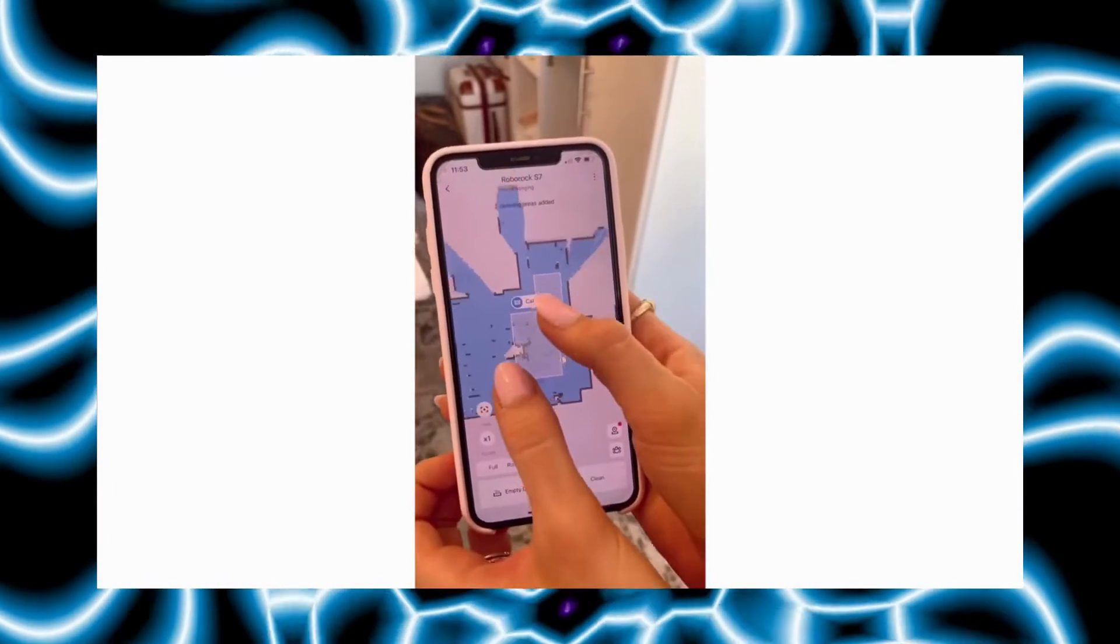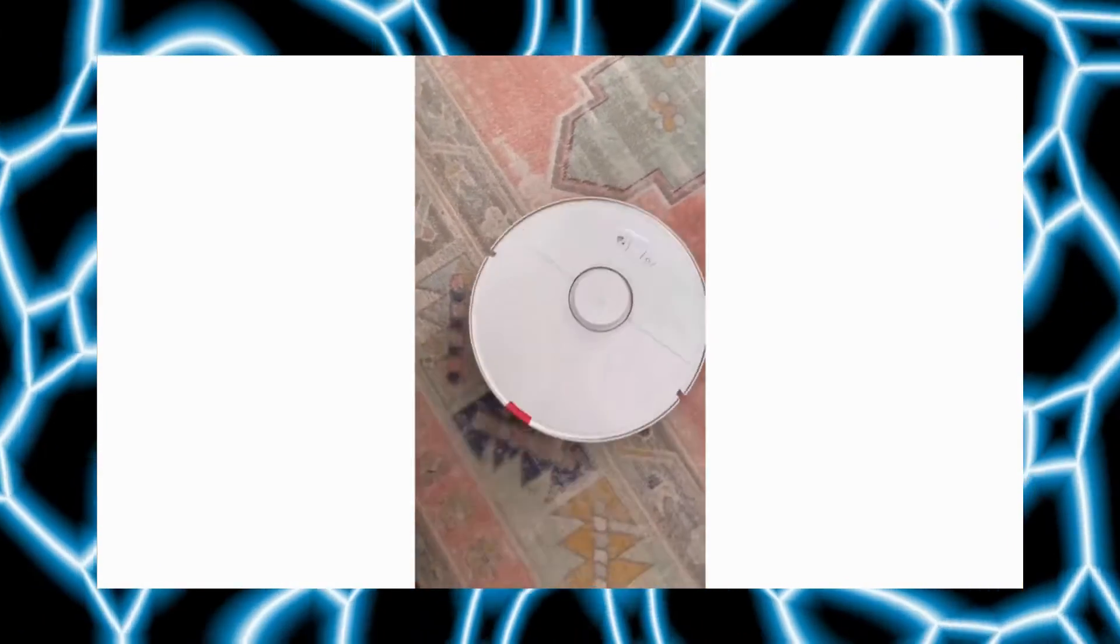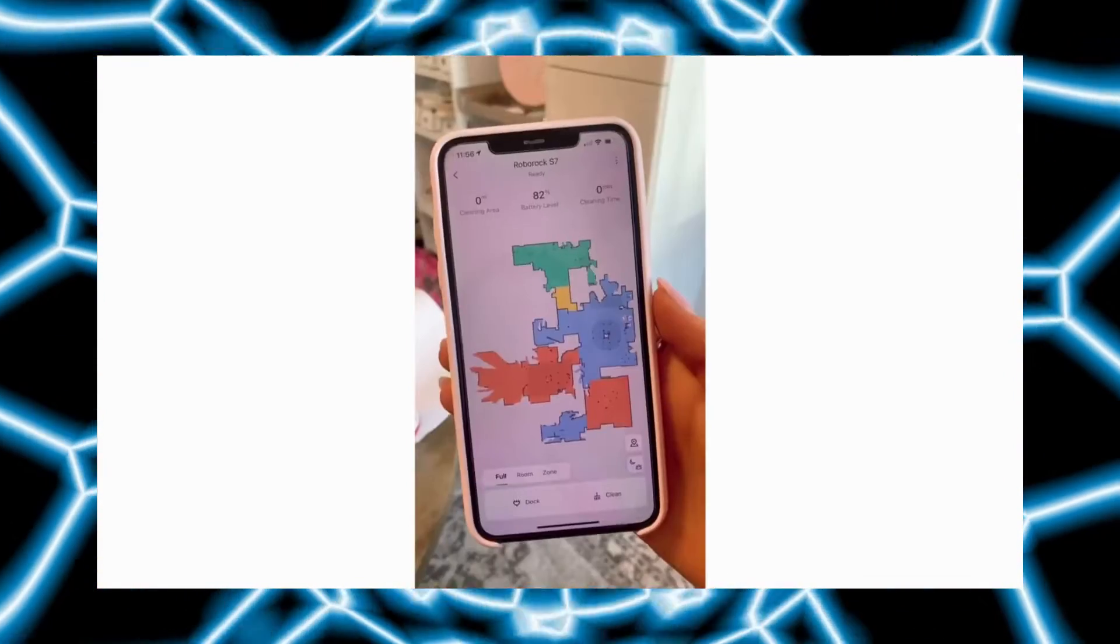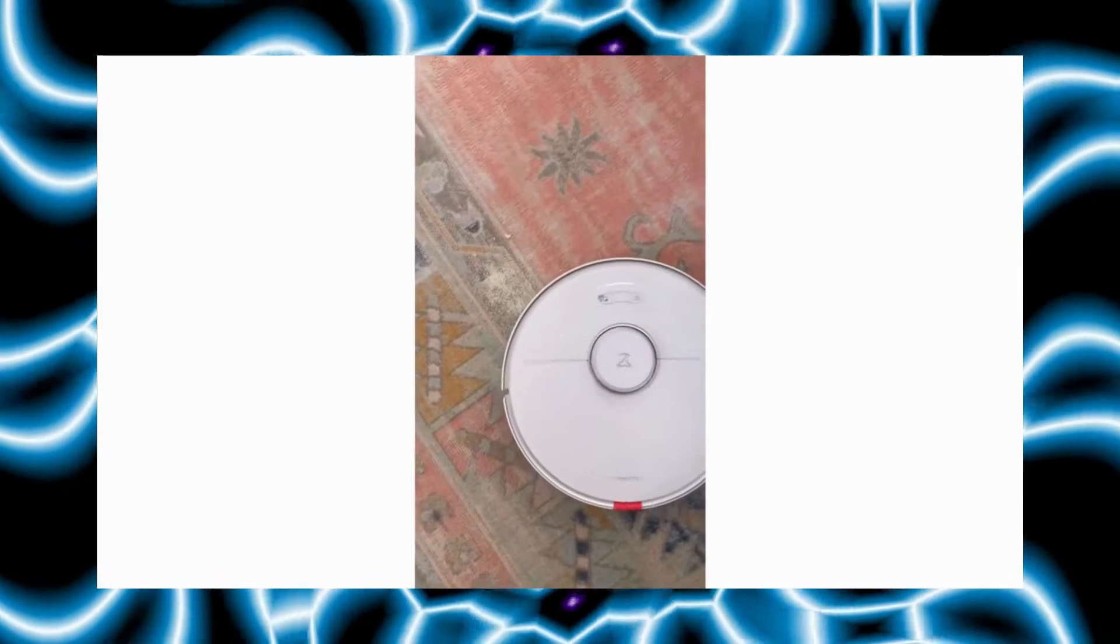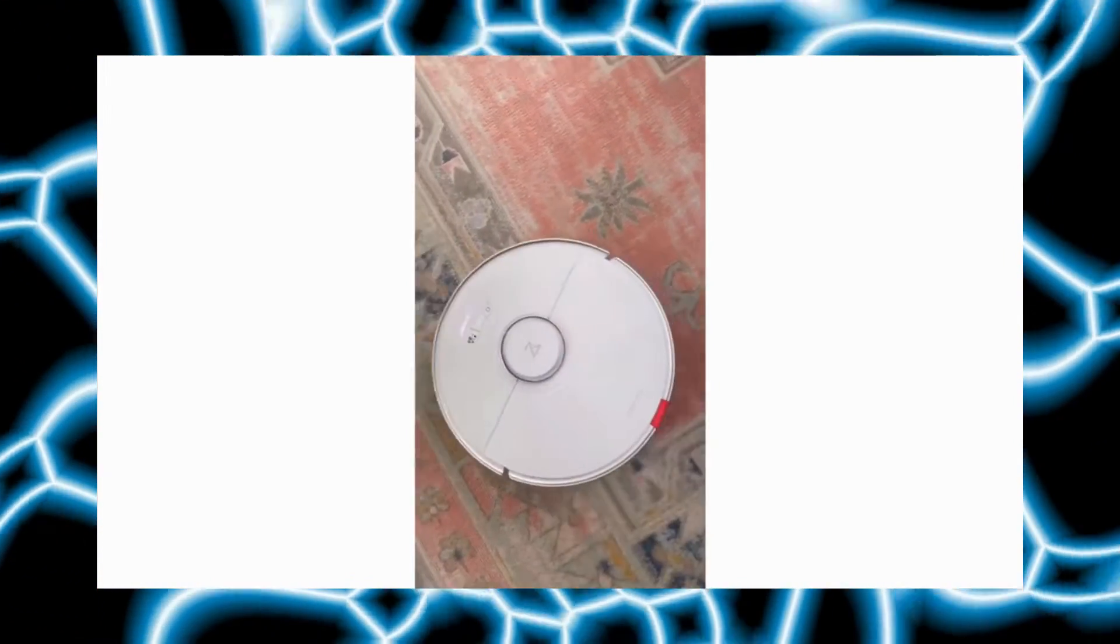You can also create no-mop zones in the app. This vacuum easily lifts crumbs, dust, and hair from floors and pulls it from deep inside carpets. Precision navigation creates pinpoint accurate maps of your home up to four levels to map out the fastest cleaning routes.